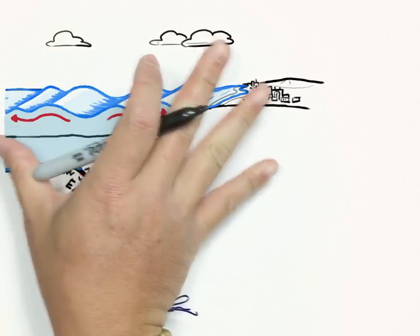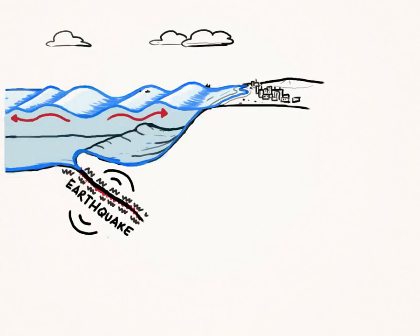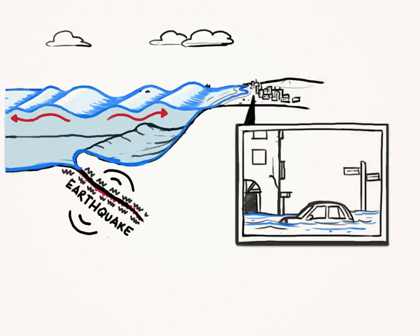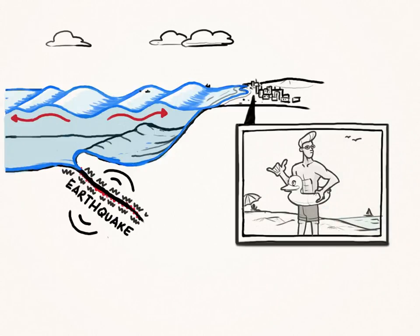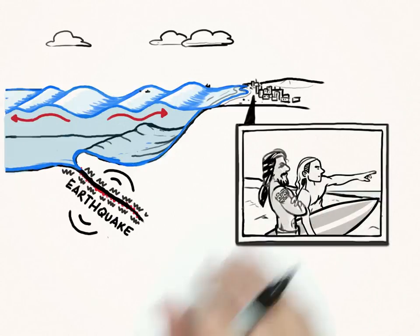These powerful, fast-rising floodwaters can smash everything in their path. Even small tsunamis can be dangerous, especially to swimmers, surfers, and boats in harbors.